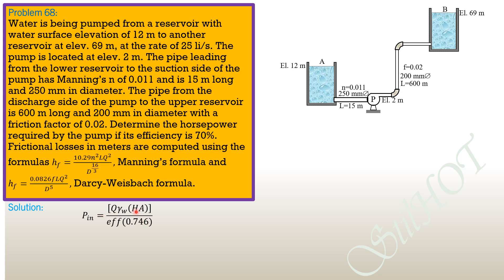To compute head added by the pump, we write the energy equation between points A and B as follows. Remember there is a pump, so there is head added in the equation: V²/2g at A + P/γ at A + z at A + H_A = V²/2g at B + P/γ at B + z at B + total head loss from A to B.